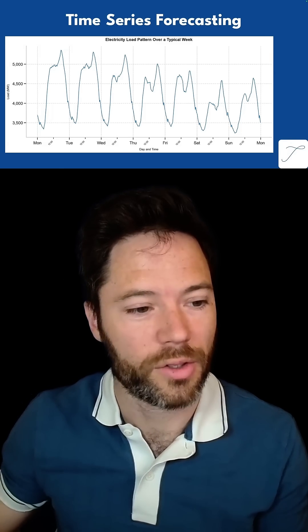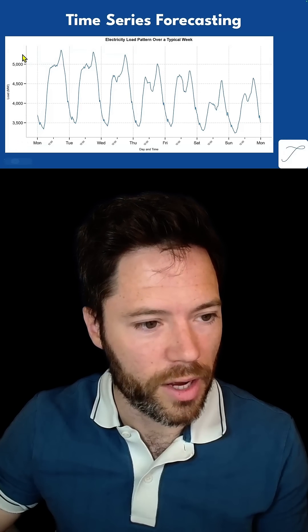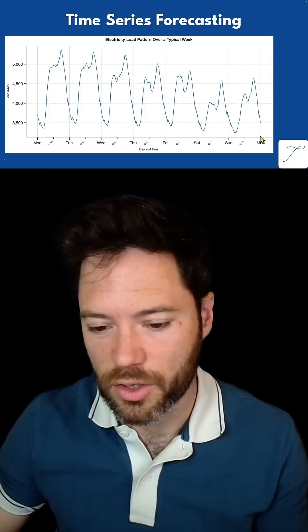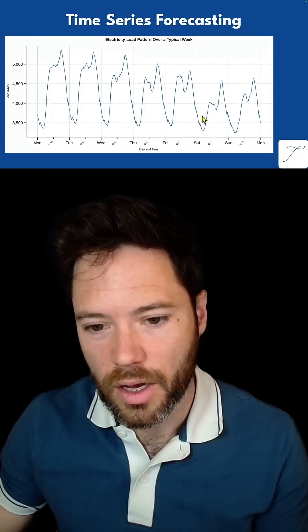Here I've got the demand of the Irish electrical grid and the y-axis shows the load in megawatts going from 3,000 to 5,000. The x-axis shows the progression of that load over a week. You can see it oscillating from day to night here with a pattern of seven different peaks.